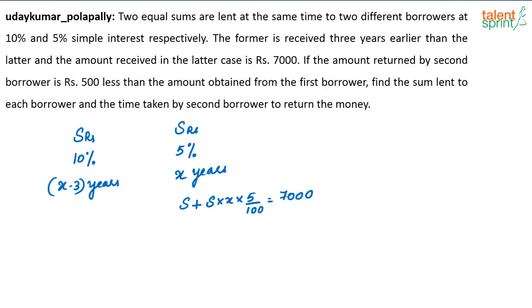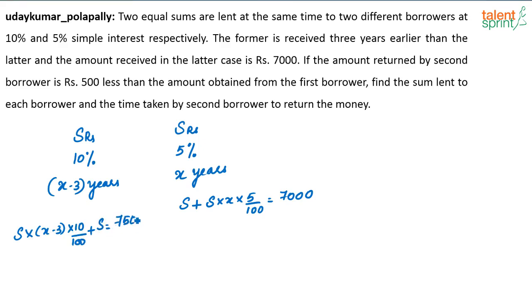If the amount returned by the second borrower is 500 less than the amount obtained from the first borrower, what is the amount obtained from the first borrower? It is 500 more than 7000, so the amount from the first borrower is 7500. You can write: S plus S times (X minus 3) times 10 divided by 100 equals 7500. These are the two equations you have — solve them.